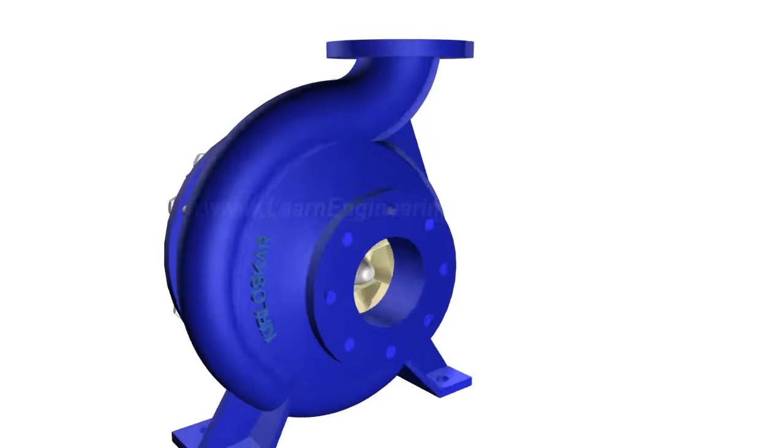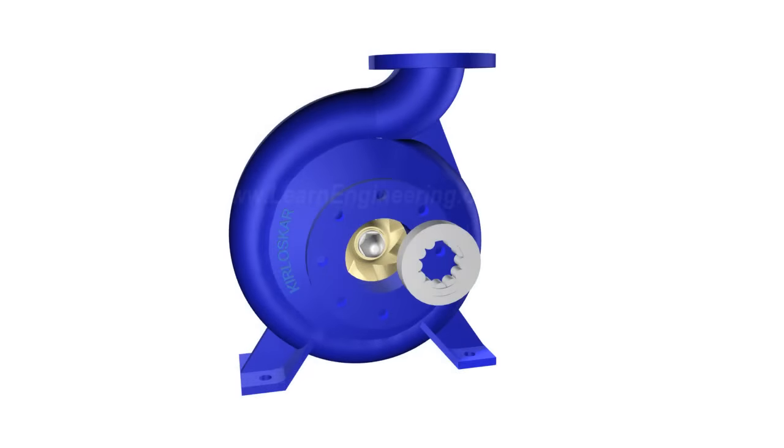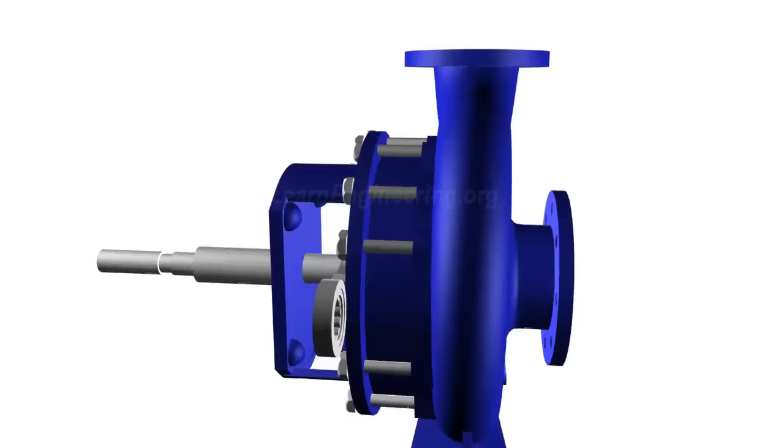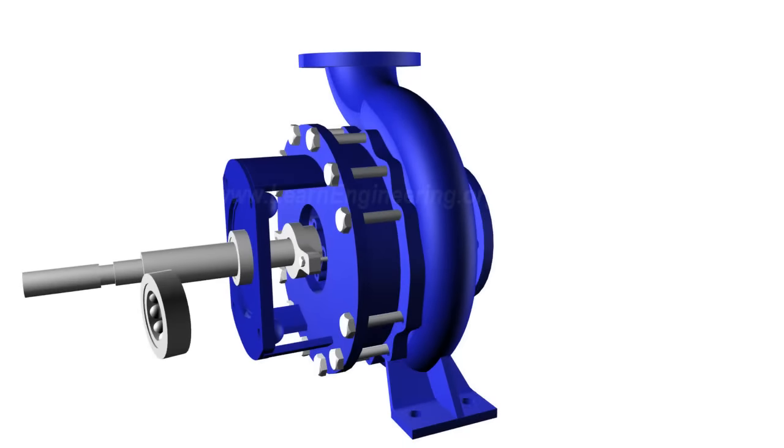The impeller is mounted on bearings. But at the suction side of the impeller, it is not advisable to fit a bearing since it will block the flow. So bearings have to be fitted at the other end. This means the impeller is mounted like a cantilever.